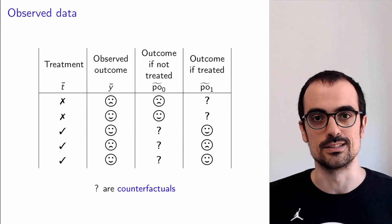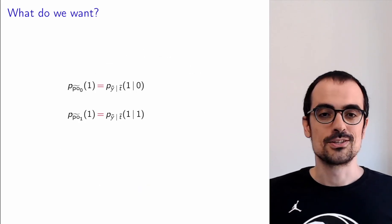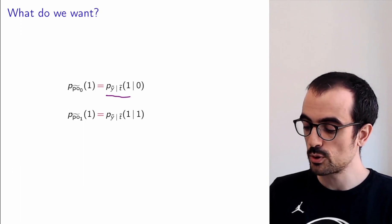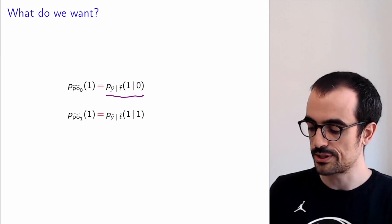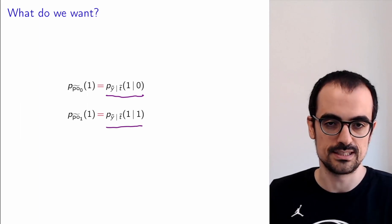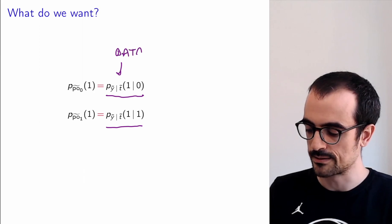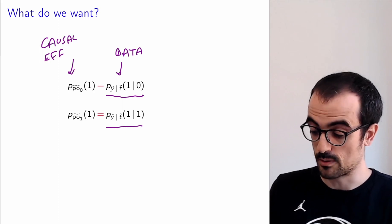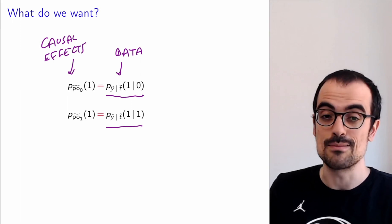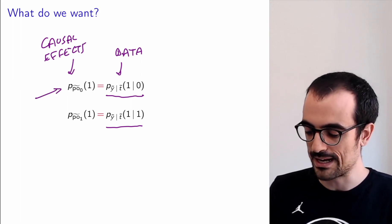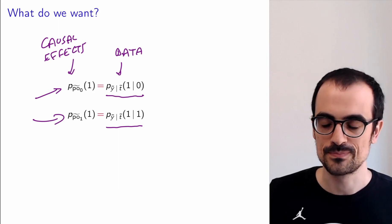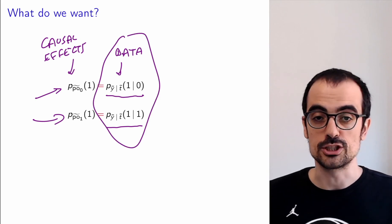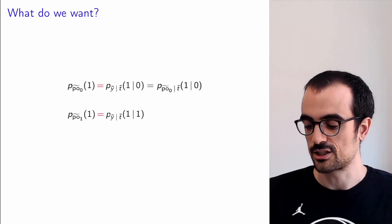What we actually observe from data is the probability that people recover given they were treated, and the probability that people recovered given they were not treated. What we want to establish a causal effect is the probability they recover in the hypothetical scenario where we don't give anyone the medicine, or where we give everyone the medicine — those probabilities from the potential outcomes. Let's express what we get from the data in terms of the potential outcomes, because there is a connection between them.